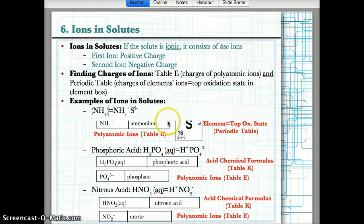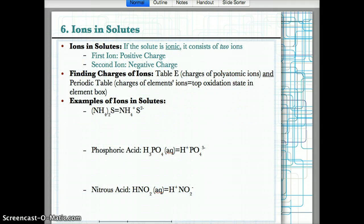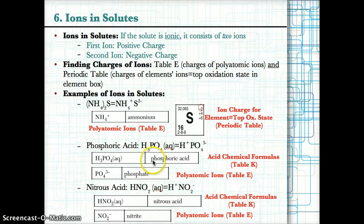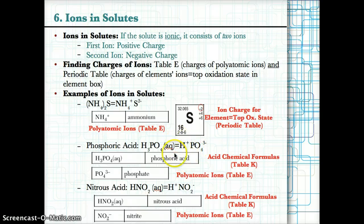Note: the correct formula should be (NH₄)₂S — apologies for any earlier error. For phosphoric acid, look it up on table K, which lists acid chemical formulas: H₃PO₄(aq) is phosphoric acid. To split into ions: H has a top oxidation state of +1 from the periodic table, and PO₄ has a charge of 3− according to table E, where it is listed as phosphate.